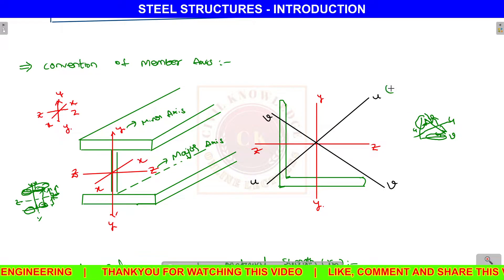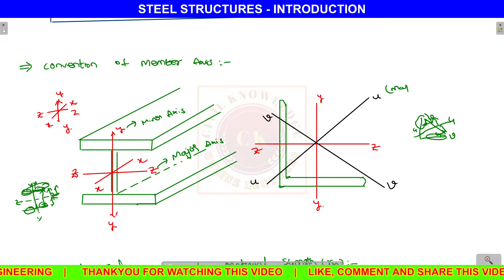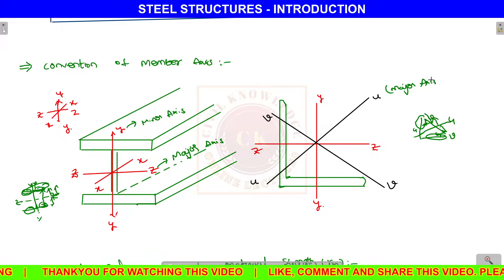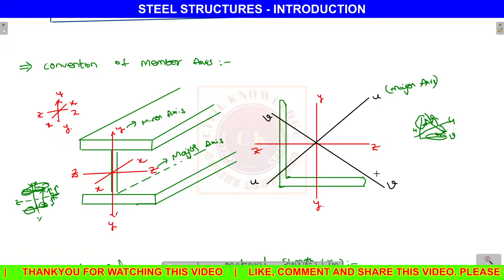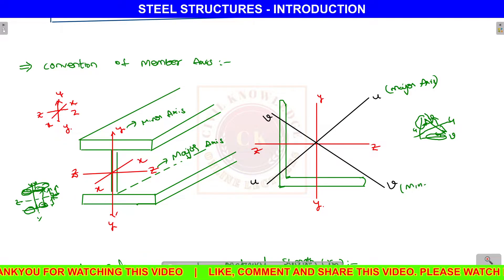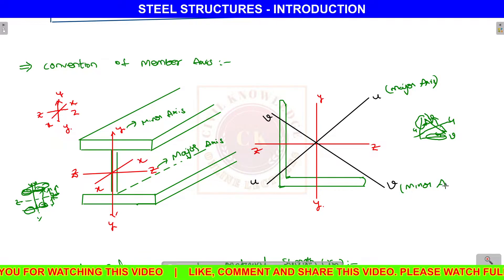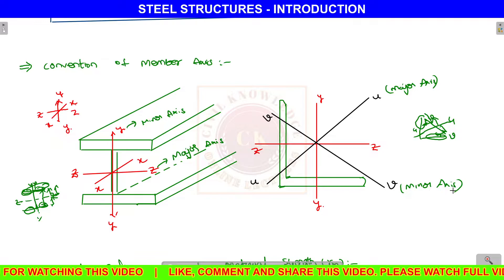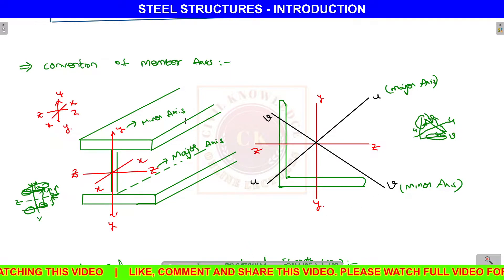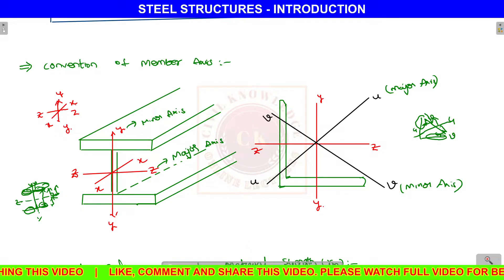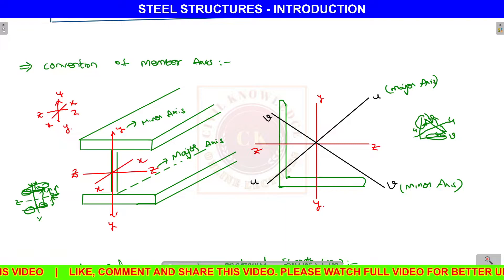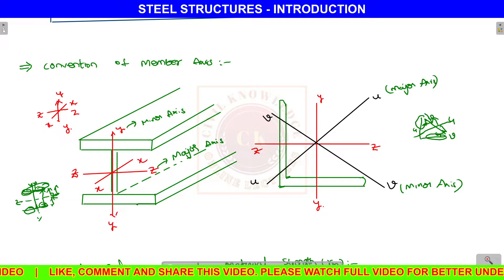For an angle section, the UU axis is the major axis and the VV axis is the minor axis. This is the convention of member axis that we use.